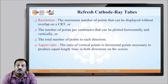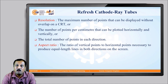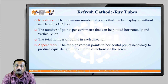The resolution of the cathode ray tube is the maximum number of points that can be displayed without overlap on the CRT. The number of points per centimeter that can be plotted horizontally or vertically, or the total number of points in each direction, is the resolution of the CRT display device. The aspect ratio of the CRT display device is the ratio of vertical points to horizontal points necessary to produce equal length lines in both directions on the screen.